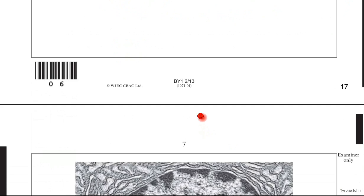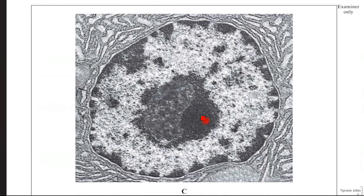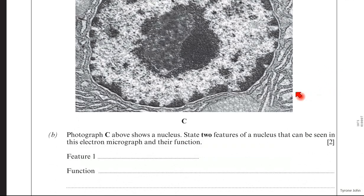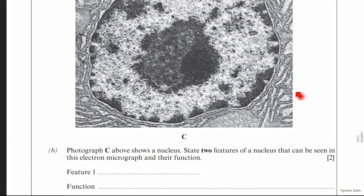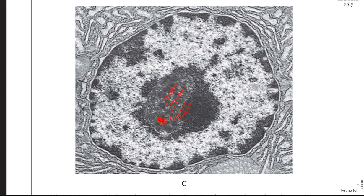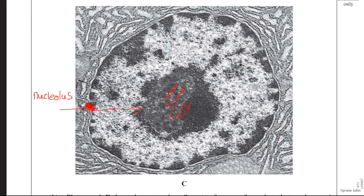If we go on now to the next part, you've got an organelle there which is the nucleus. And the question is asking you to state two features of a nucleus that can be seen in this electron micrograph and their function. Well to me the obvious ones are this region here which is the nucleolus.